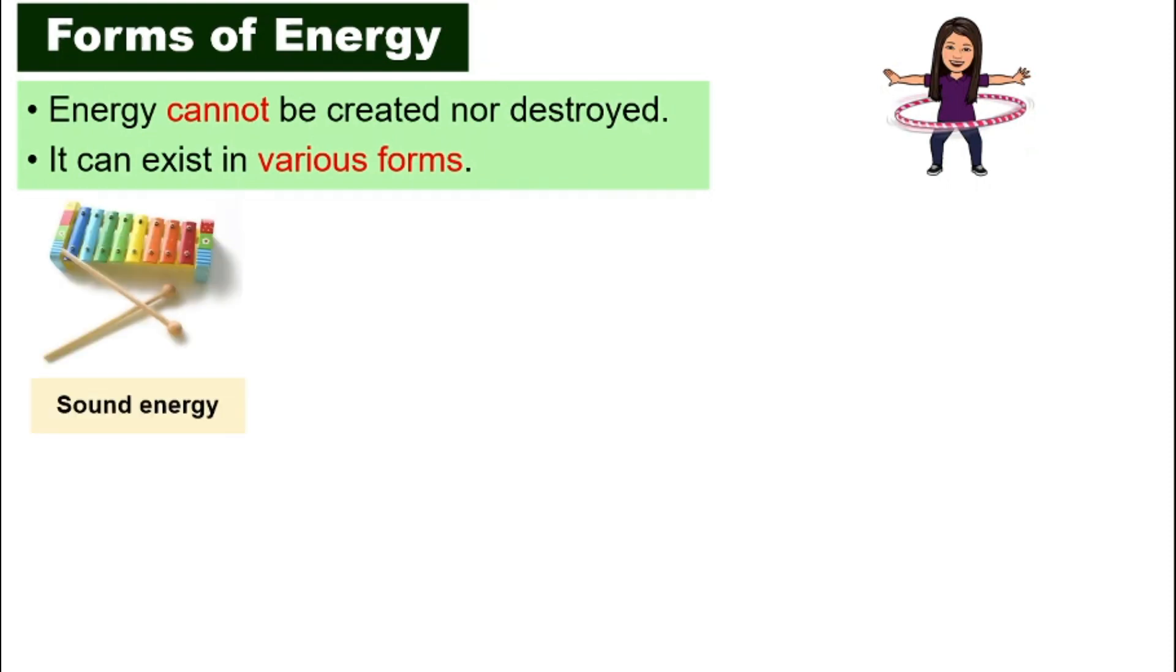The first one will be sound energy. I love this because J. Couture loves music. So an example of a sound energy will be those sound energy produced by a musical instrument. Anything that makes a sound or a noise produce sound energy.